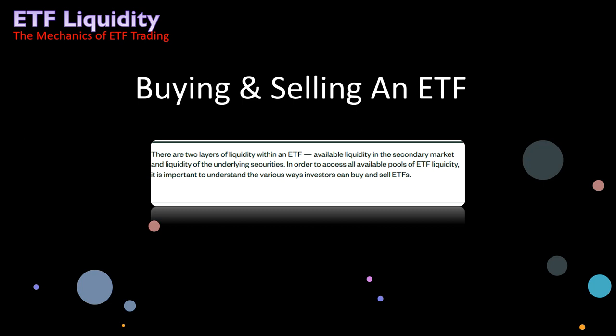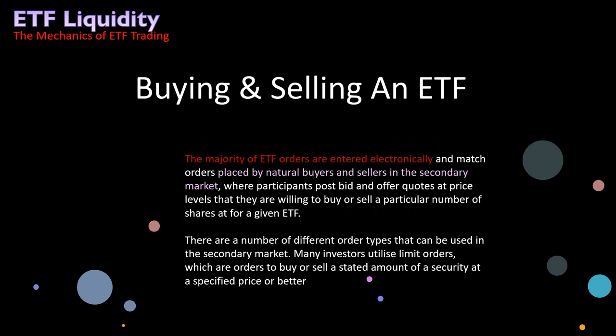Now, buying and selling ETFs. There are two layers of liquidity within an ETF: available liquidity in the secondary market where you and I trade, and liquidity of the underlying securities. The majority of ETF orders are entered electronically and match orders placed by natural buyers and sellers. For a given ETF, there are a number of different order types that can be used. Most investors utilize limit orders, which are orders to buy or sell a stated amount of securities at a specified price or better.